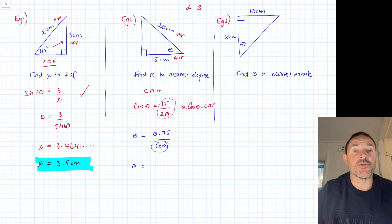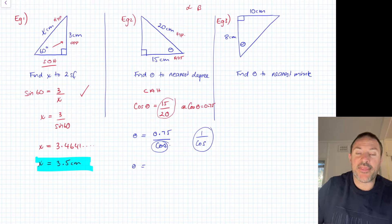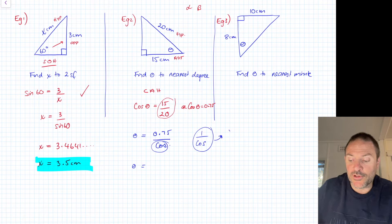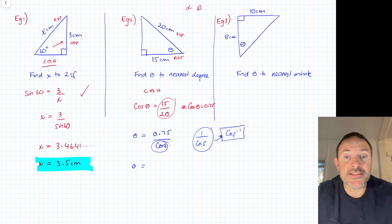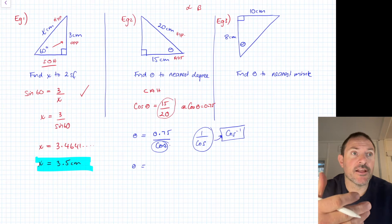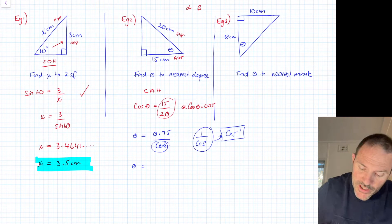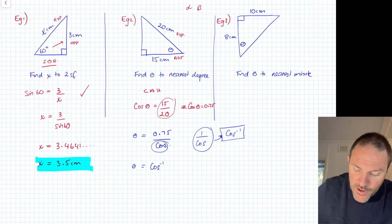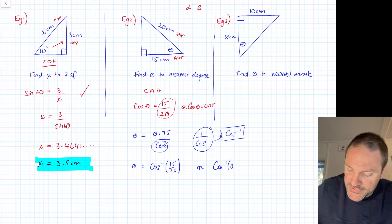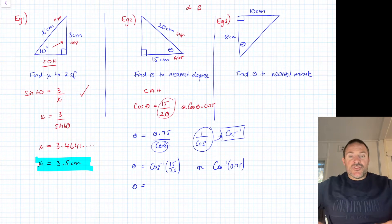If I revise back to our indices work, can you remember another way to write that in index form? Well, hopefully you remember that could look like this: cos to negative 1. And that, my friends, is a key that's on your calculator. In fact, it's above the cos button. So we can do cos negative 1 of 15 over 20, or if you want, cos negative 1 of 0.75, whatever you want to have, that's fine, to get my answer.